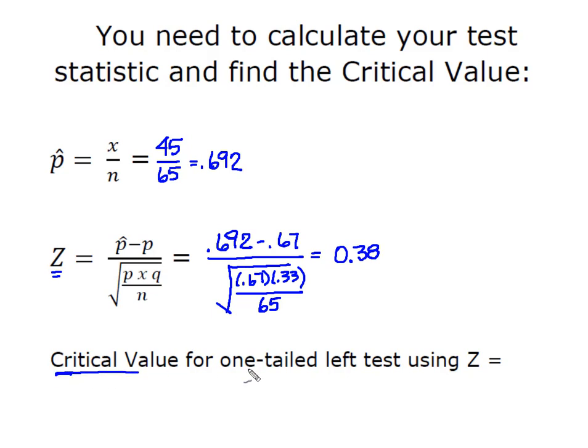So now I need a critical value for a one tailed left test using Z where my alpha is equal to 0.05, and we know that that is a standard value of Z equal to 1.645, but because I'm running a one tailed left test that critical value has to be negative.